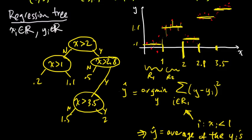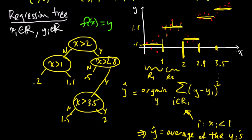Let me just point out: this resulting function f(x) — in a regression problem, we always get a function f(x) — and this function is piecewise constant on these regions. More generally, it will be piecewise constant in regions defined by the binary splits in some higher-dimensional space.